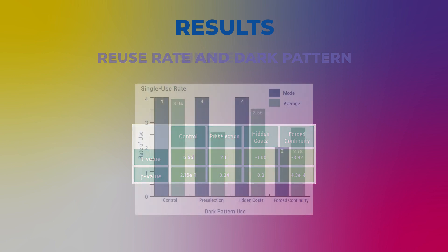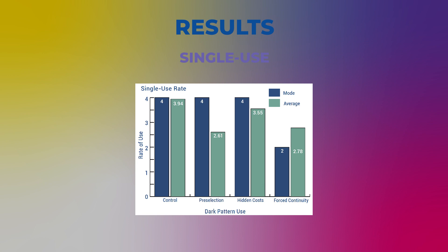Single Use: It was hypothesized that single-use rates would be similar to reuse rates and have an effect on them. The survey found participants were most likely to use the control and least likely to use pre-selection one time — which differs from the reuse rates. A two-way ANOVA found no relationship between single-use rate and reuse rate, meaning this hypothesis was not confirmed.